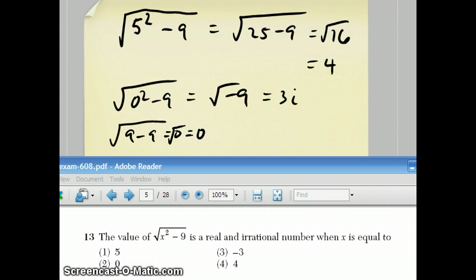But finally, when you put in choice 4, square root of 4 squared minus 9 is square root of 16 minus 9 is the square root of 7. And that is real, but it is irrational, and that's your answer for question number 13.